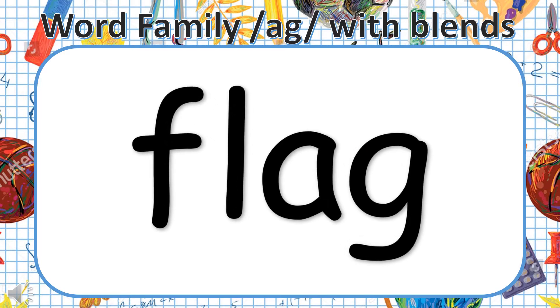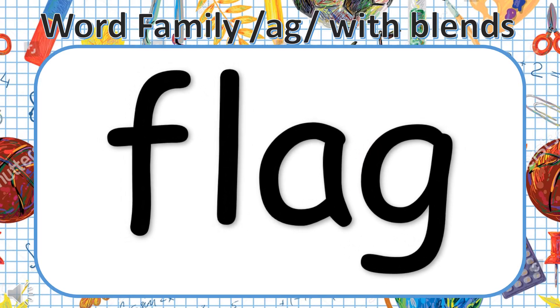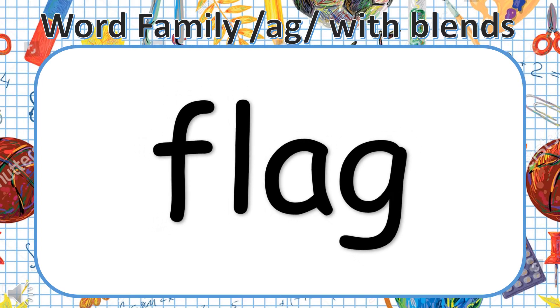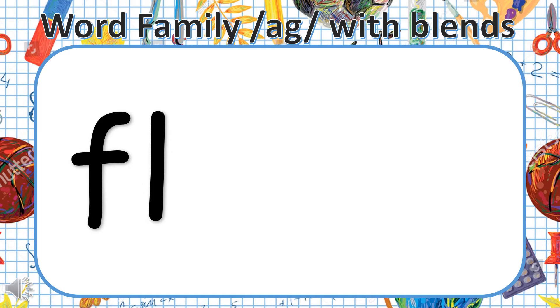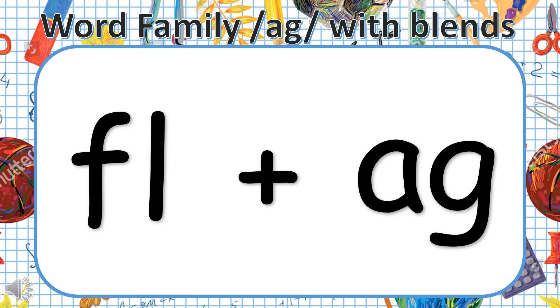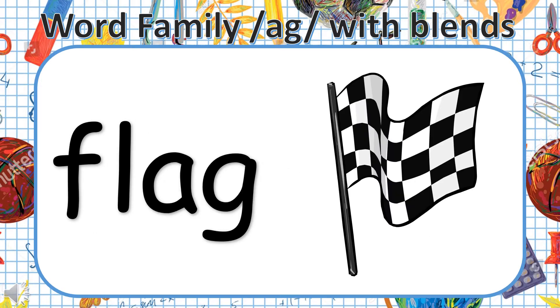The first word we are going to look at today is FLAG. Listen carefully — FLAG. Let's break up the word into the blend and the word family. In this word we are using the L blend with the letter F, and together they make the sound FL. Then we add the AG sound. I wave the checkered flag to end the race.